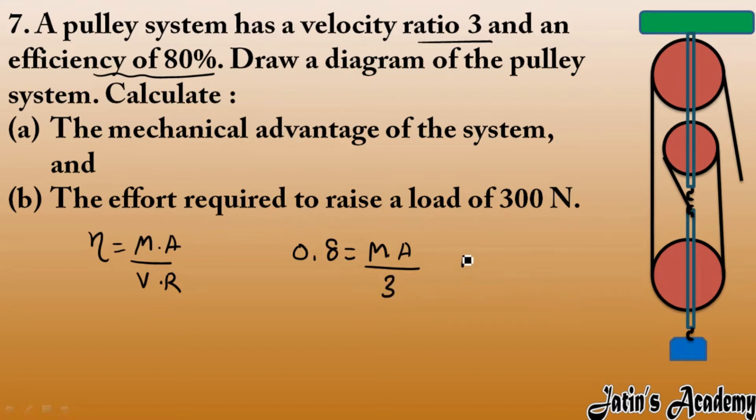So here we got mechanical advantage as 3 into 0.8 which is 2.4. So mechanical advantage of the system we have 2.4. Now we have to calculate the effort required to raise a load of 300 Newton.